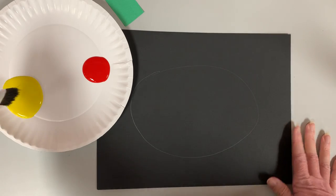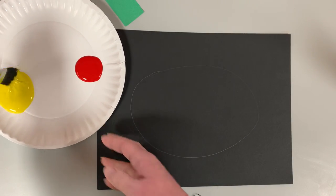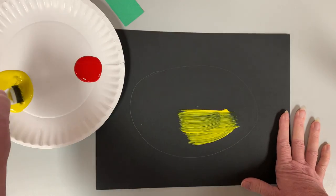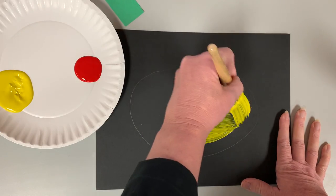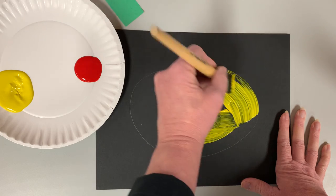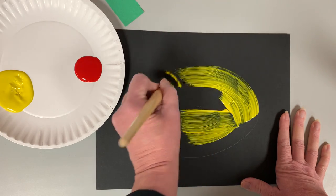Then we're gonna take paint. We're gonna take yellow first and I want you to paint your pumpkin yellow. Now I know pumpkins are not yellow. We're gonna mix paint to get orange.